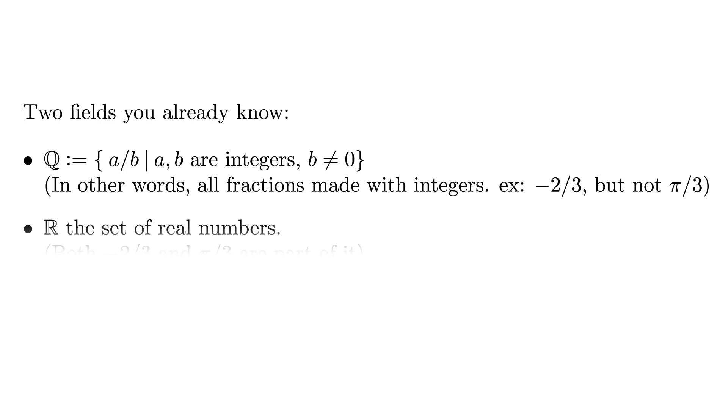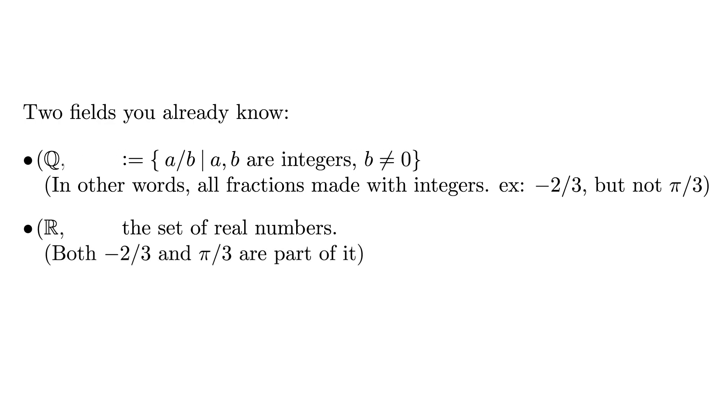You already know at least two fields: the field Q of rational numbers and the field R of real numbers, both taken with addition and multiplication. It might be useful to keep those in mind, and you can check in your head some of the properties as we go along.